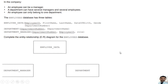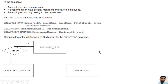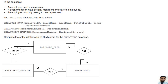We'll take another question. The employee database has three tables: employee data, department, and department manager. Complete the entity relationship (ER) diagram for the employee database. An employee can only belong to one department, and a department can have several employees — so employee and department has a one-to-many relationship. Also, an employee can be a manager, and a department can have several managers, so that gives us another one-to-many relationship.